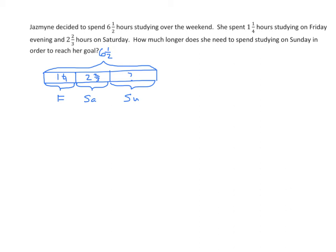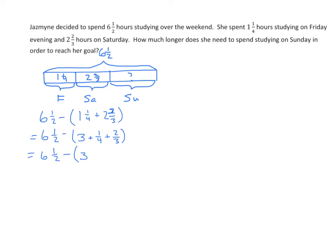Let's do it — one more example of solving these problems. I have 6 and 1 half minus the sum of my two known days. I have 1 and 1 fourth plus 2 and 2 thirds. Finding the sum of the whole numbers: 1 plus 2 is 3. Then finding the sum of the fractions — my common unit is 12. 1 fourth becomes 3 twelfths, and 2 thirds becomes 8 twelfths. So now I have 6 and 1 half minus 3 and 11 twelfths.